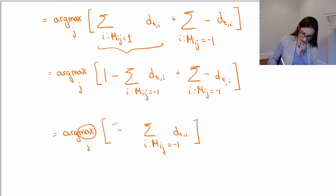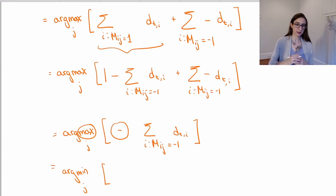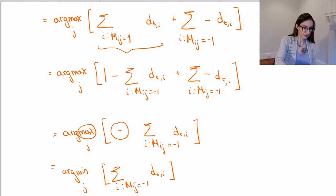And then this argmax, combined with this negative, turns this whole thing into an argmin. So if you're maximizing the negative of something, that's the same thing as minimizing that. So it's sum over i such that M_ij equals negative one d_ti.